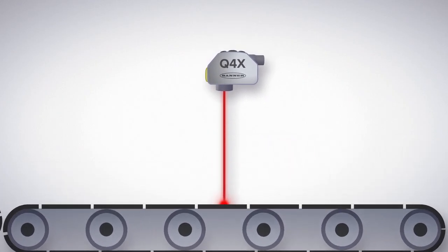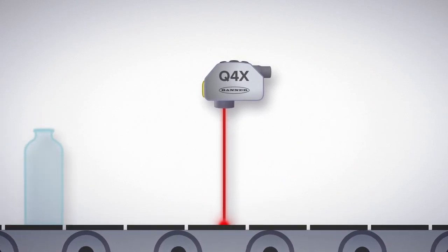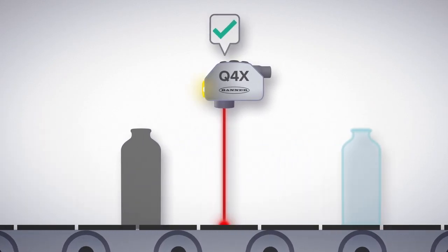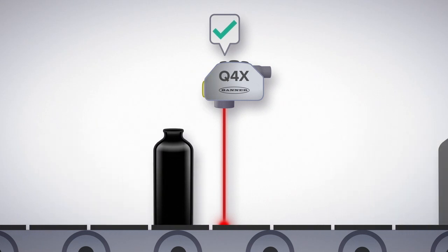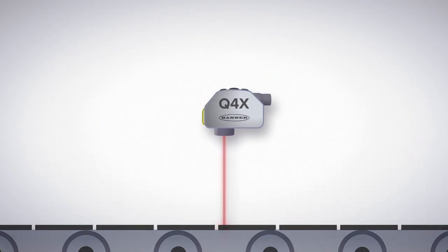Dual mode also allows smart sensors to detect targets that other sensors can't, including clear objects, low contrast applications, and very dark objects. All with one very powerful device.